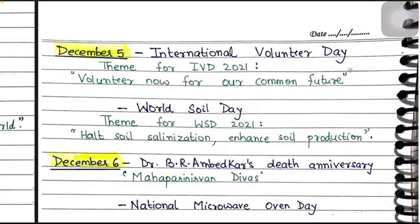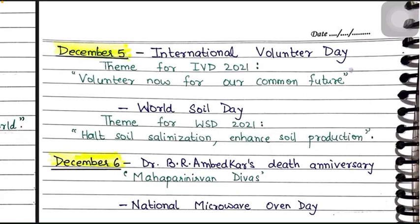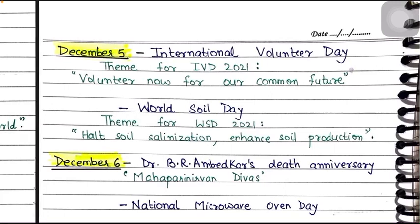December 6 is Dr. B.R. Ambedkar's death anniversary. Dr. Bheem Rao Ramji Ambedkar, known as the Father of the Indian Constitution, passed away on December 6, 1956. This day is also called Mahaparinirvan Divas. December 6 is also celebrated as National Microwave Oven Day, to honor the invention of the microwave, which has made lives easier and changed how we use our kitchens. Dr. Ambedkar was also a significant figure in Buddhism.